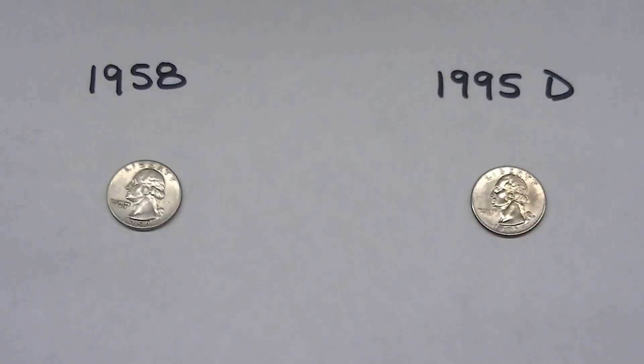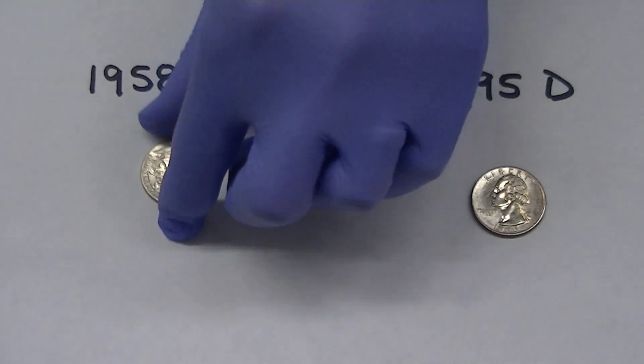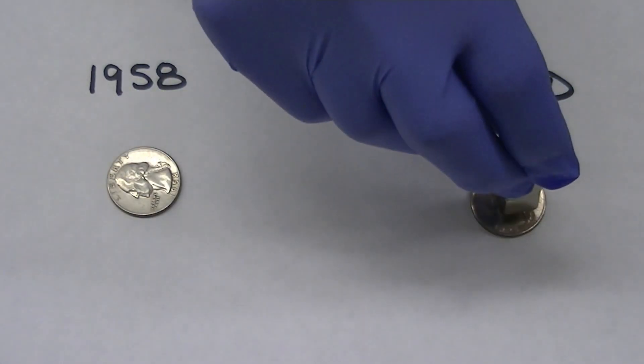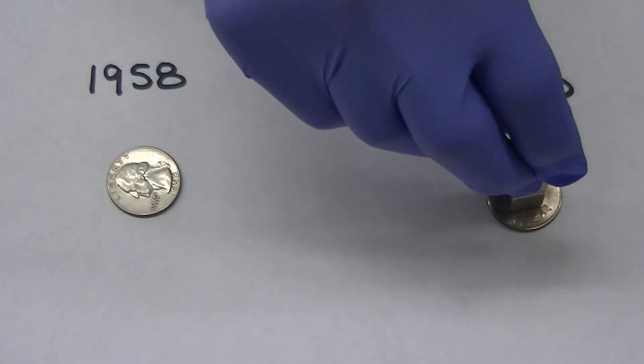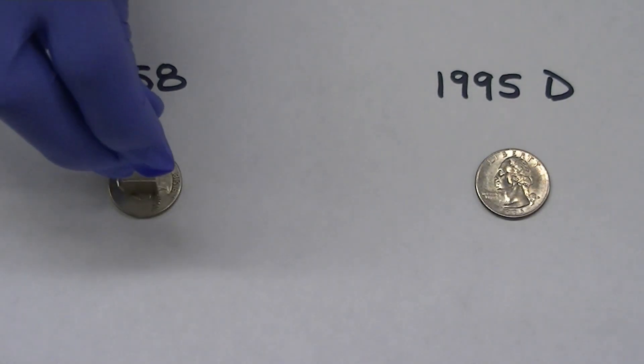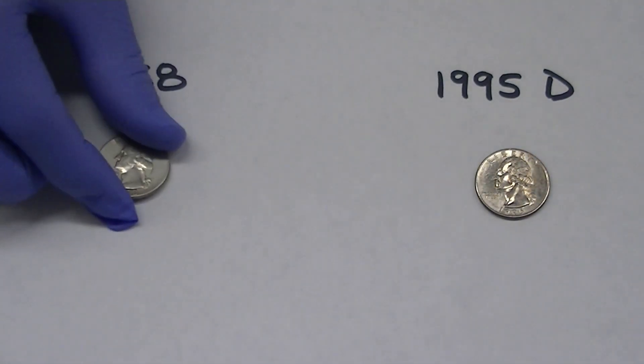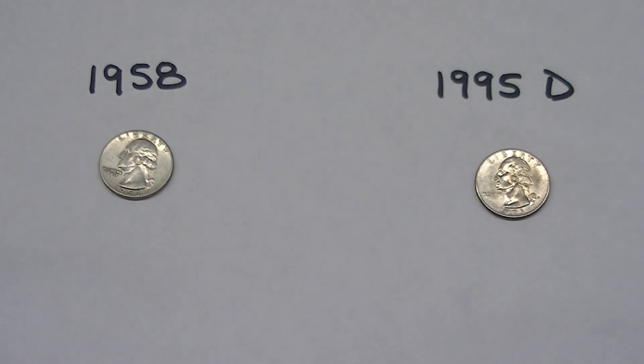I hope you enjoyed this video that went over the magnetic properties of some metals found in coins. In closing, here's a question for you. Which of these two coins probably contains more silver? I look forward to seeing your answer in the comments.